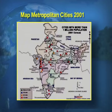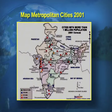If you look at the screens, children, this is a map from the census 2001 showing the various metropolitan centers and their placement in the different states.